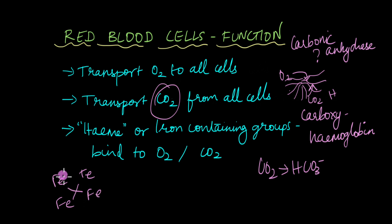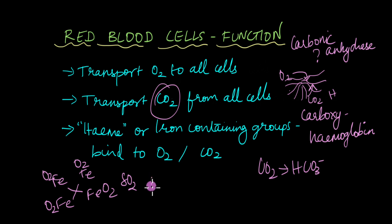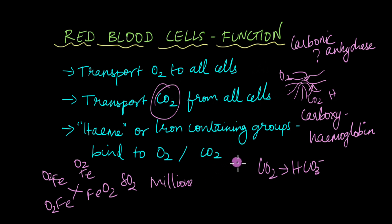Each red blood cell has millions of hemoglobin molecules, and each hemoglobin has four iron cores. To each iron core, one oxygen molecule can bind — so with one hemoglobin you can transport four oxygen molecules. Your one red blood cell has millions of hemoglobin, which means millions of oxygen molecules can be transported. There are millions of RBCs circulating throughout your blood at any given time, so just imagine the amount of oxygen that can be transported to all cells. That is why red blood cells are very important.